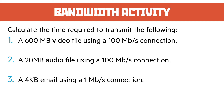The way we calculate the value of a transmission is to make sure we're all working in the same units. In the first example we have a 600 megabyte video file and a 100 megabit connection. The first thing to do is work out what 100 megabits is in megabytes, and we do that by dividing by 8, because there are 8 bits in a byte.